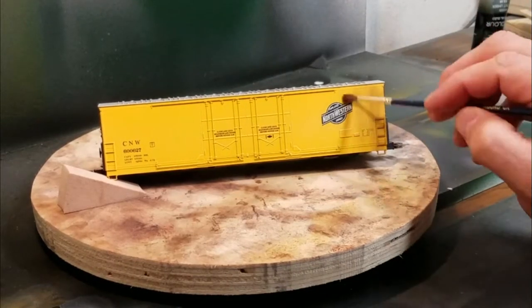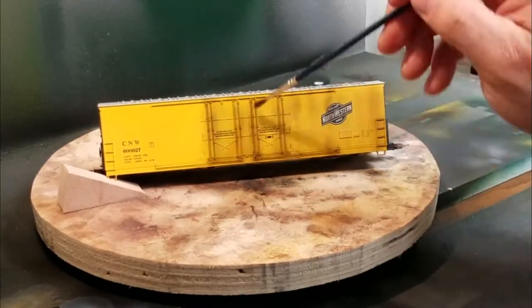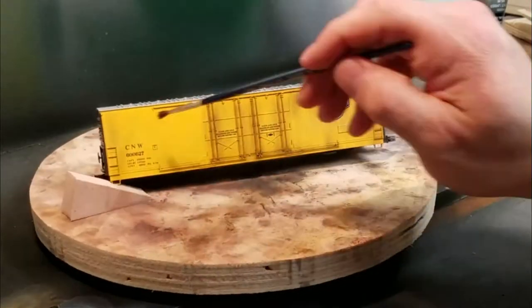Once the fade has dried, I use Bragdon Weathering powders to apply the first coats of grime and rust. As you can see here, it goes pretty quick.